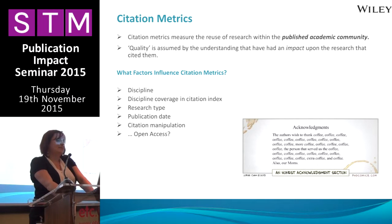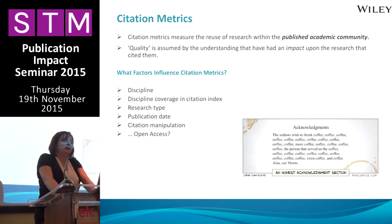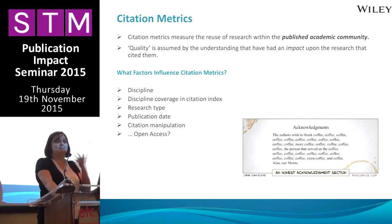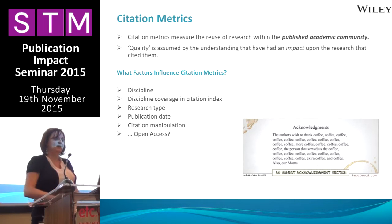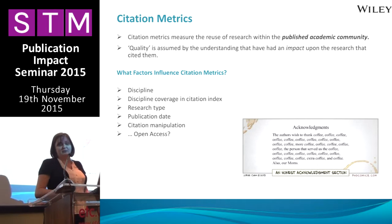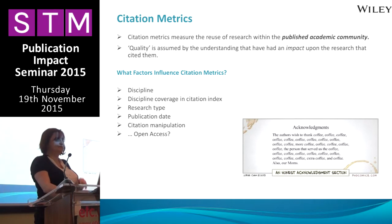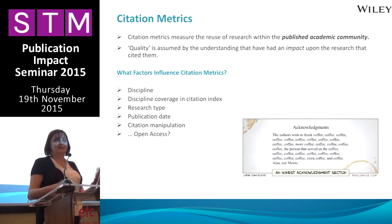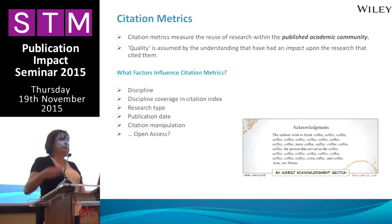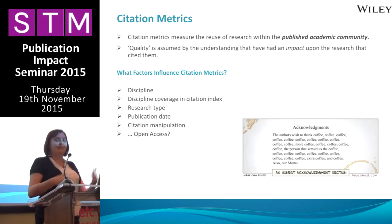Citation metrics measure the reuse of research within the published academic community, and quality is assumed by the understanding that citing a paper means it's had an impact on your research. But there are many factors that influence citation metrics. Things like the discipline — there are vastly different citation rates within different disciplines. You cannot compare the citations of a paper published in cell biology to the citations of a paper published in history. There are different practices and different publication behaviours within each academic community.